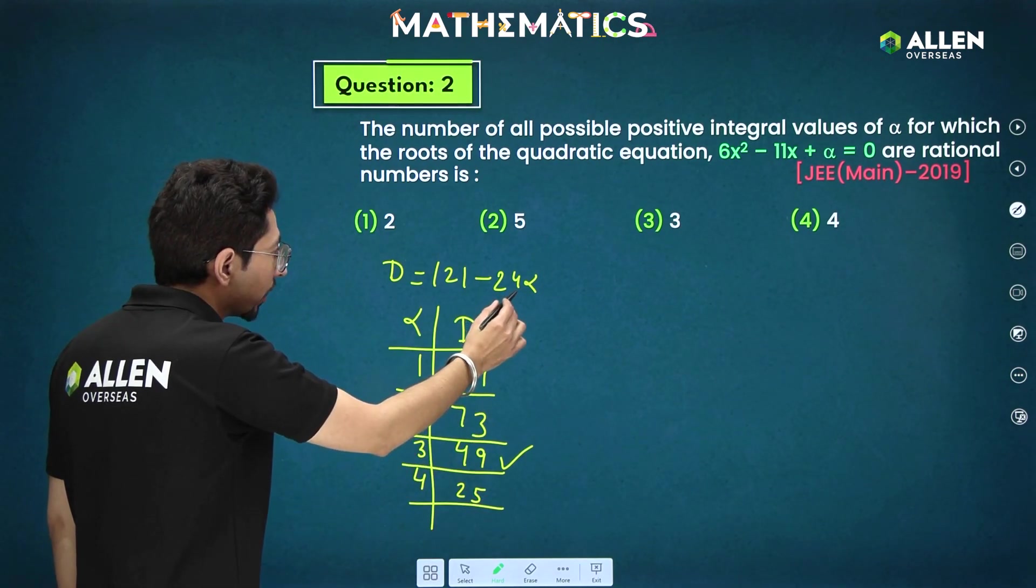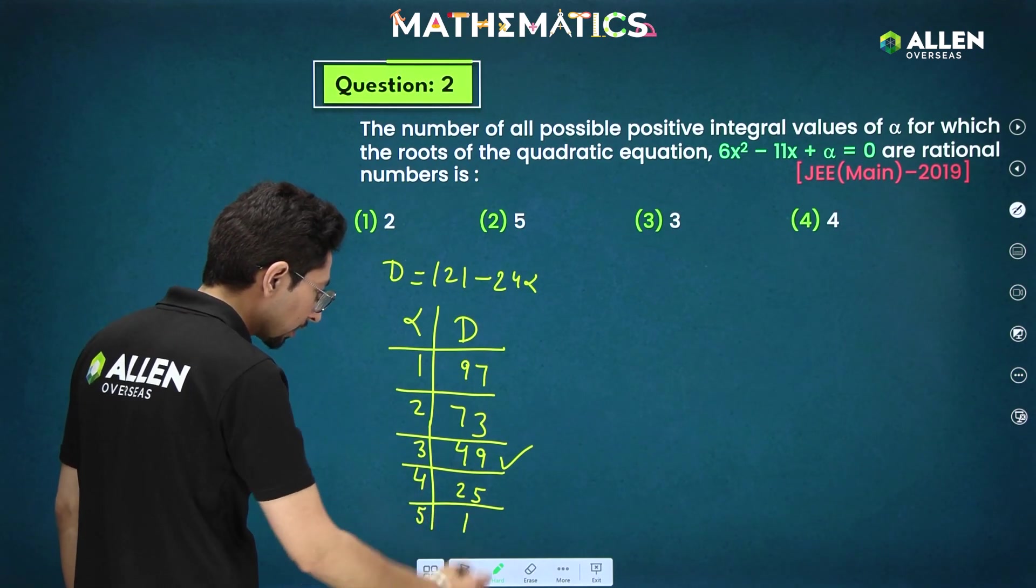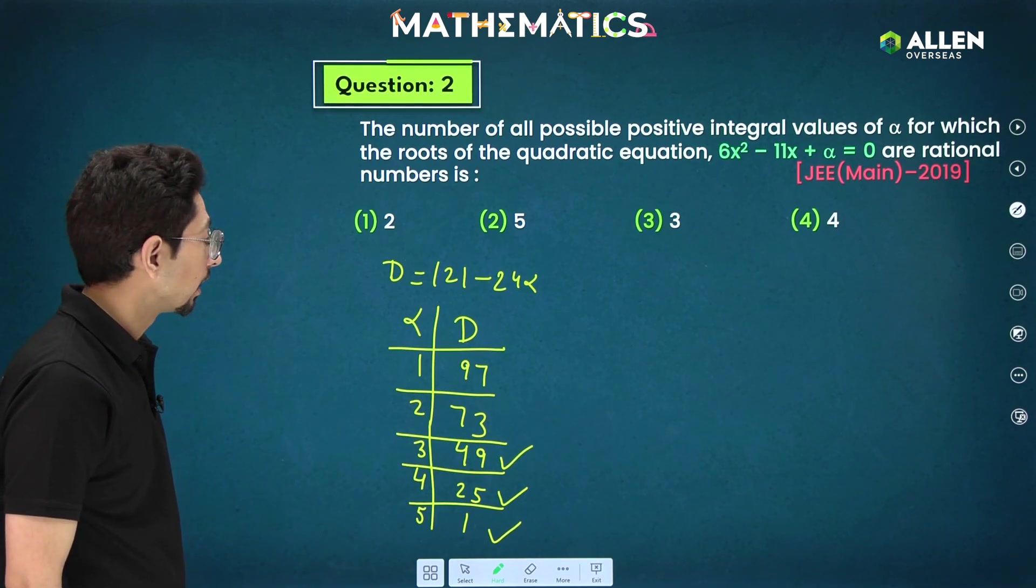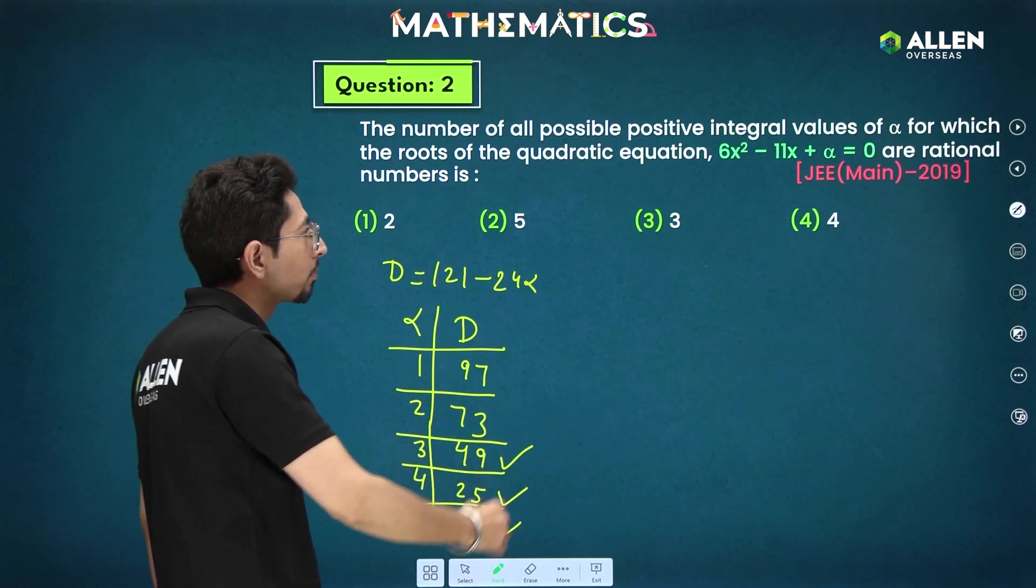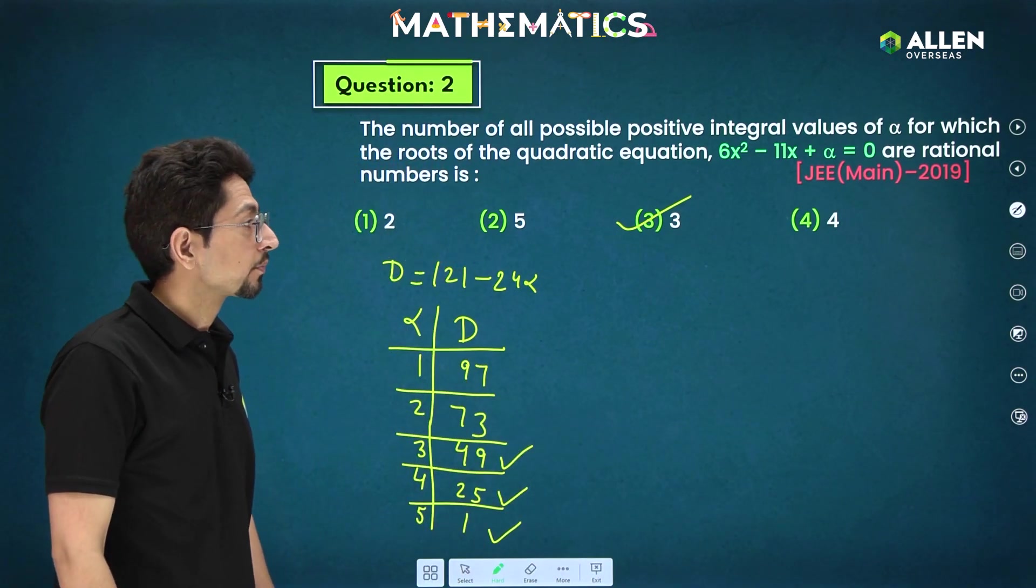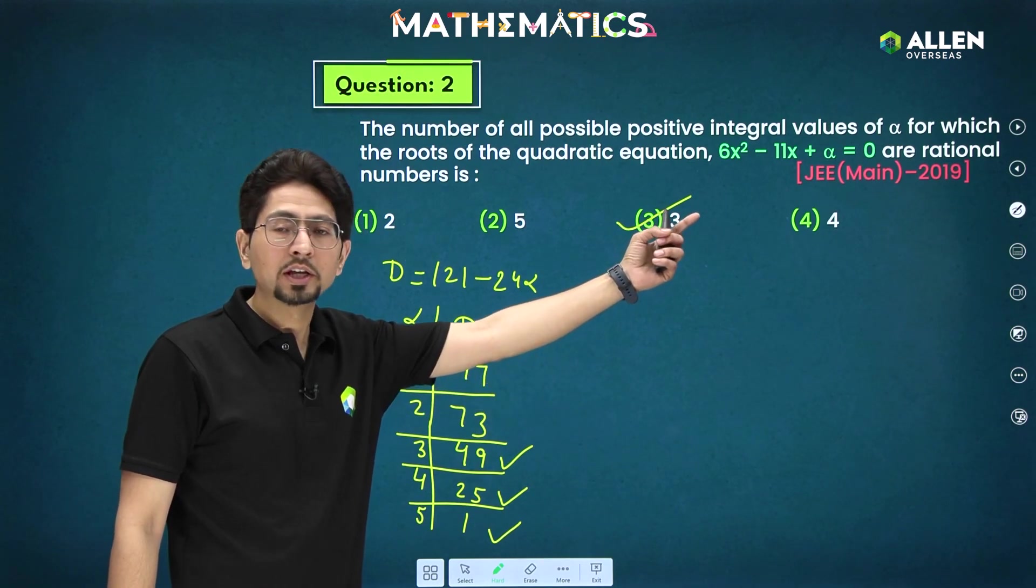Last value, we can also take 5 also. 24 into 5, that is 120. So, 121 - 120. That is 1. These 3 will be giving you perfect square. After this, you will be getting discriminant negative only. So, 3 values are possible for which you are getting rational roots. Proceeding with next question. This is previous year question only. J-Main 2019.